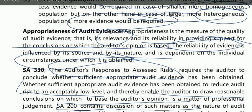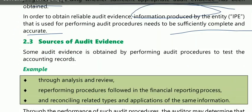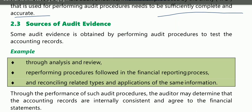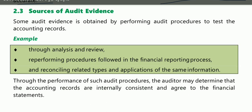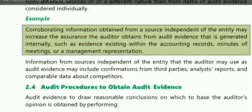Sources of audit evidence: some audit evidence is obtained by performing audit procedures to test the accounting records. We test the accounting records — we analyze, review, re-perform, and reconcile. Through such audit procedures, the auditor may determine that the accounting records are internally consistent and agree to the financial statements. This is one source of audit evidence.